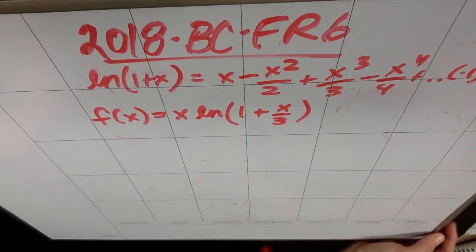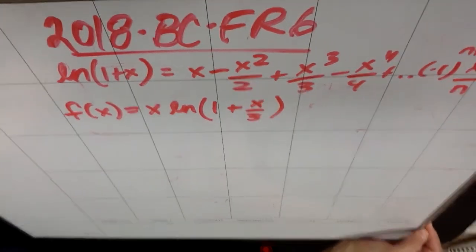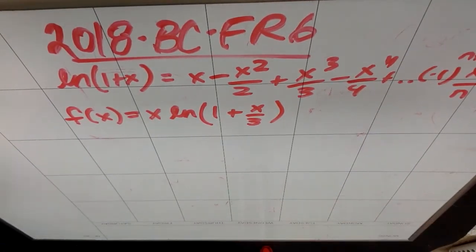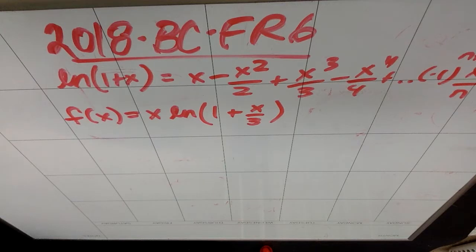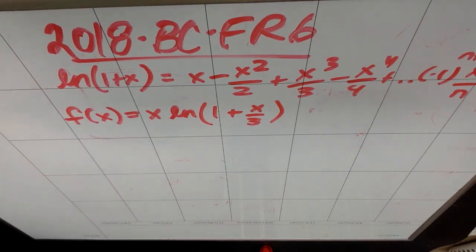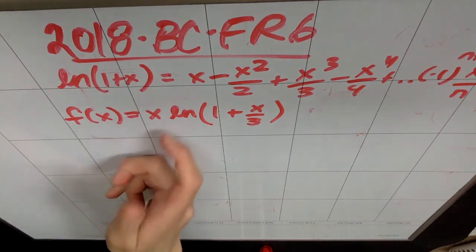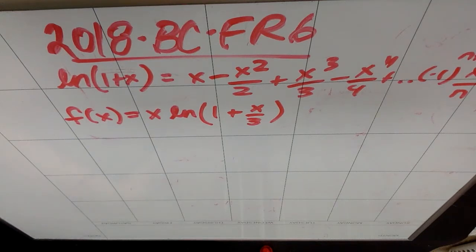We are back at AP Review. This is 2018 BC free response number six. We're starting off with the McLaurin series for the natural log of the quantity one plus x, which is one that you can have memorized, but they did you a solid here and did not make you memorize it. So thanks, AP.